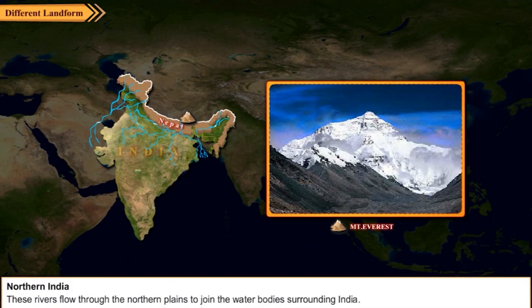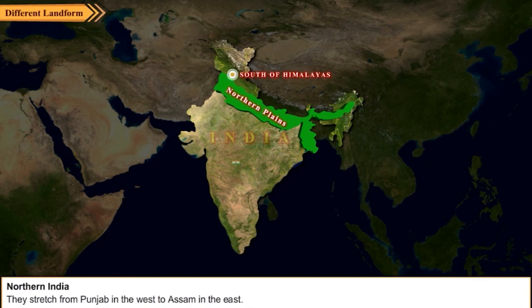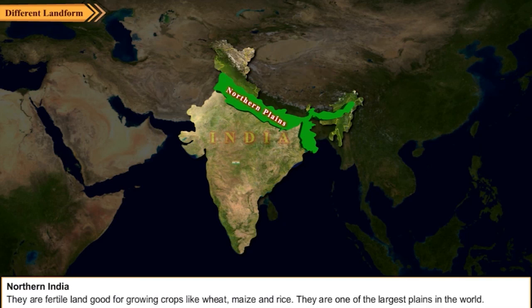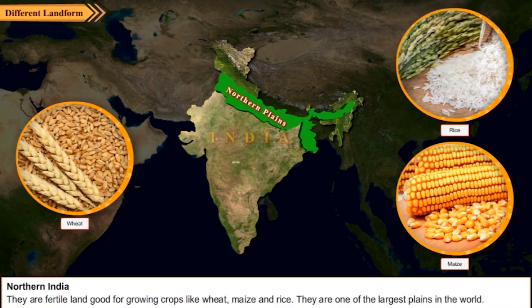These rivers flow through the northern plains to join the water bodies surrounding India. The northern plains, also called the gigantic plains, are known as the food bowl of India. They stretch from Punjab in the west to Assam in the east, and are fertile land good for growing crops like wheat, maize, and rice. They are one of the largest plains in the world.